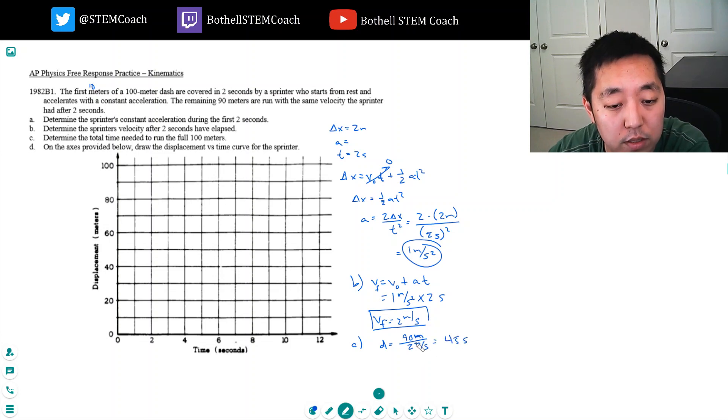And that takes 45 seconds. To travel 90 meters at two meters per second takes 45 seconds, plus the initial two seconds, so it's 47 seconds.